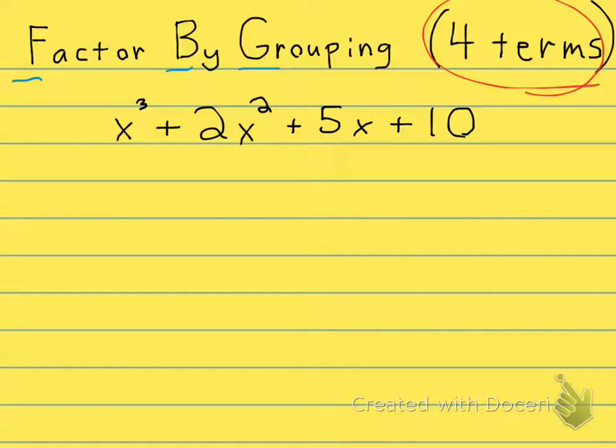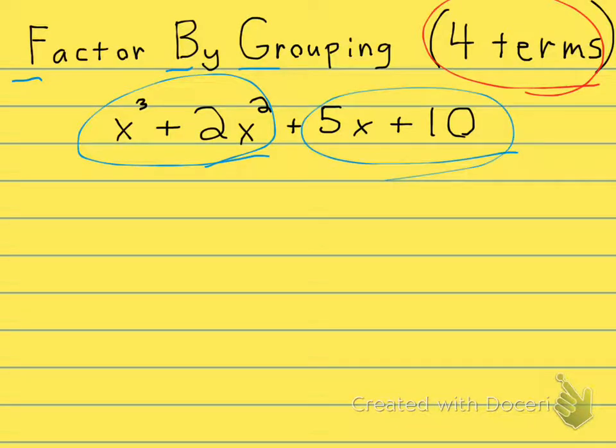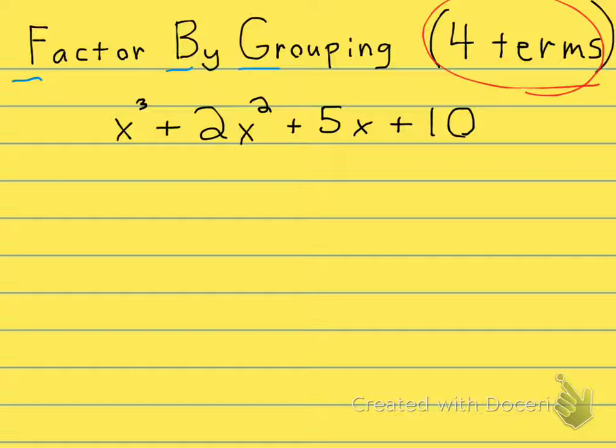And just like you see in the title, factor by grouping, we're going to group this polynomial, and it makes sense to put the first two in a group and then to put the second two in a group. It wouldn't make any sense to group the first and the last or anything like that. So the first goes in a group. I like to use the colors red and blue. I like to think of Spider-Man, red and blue.